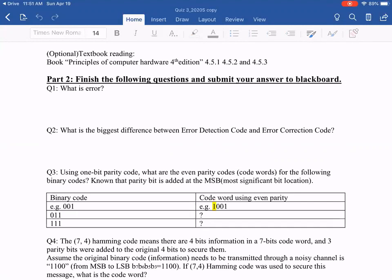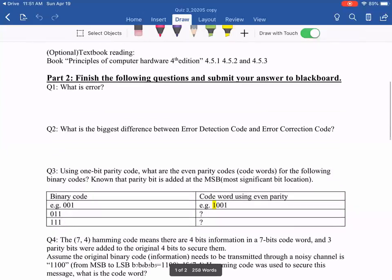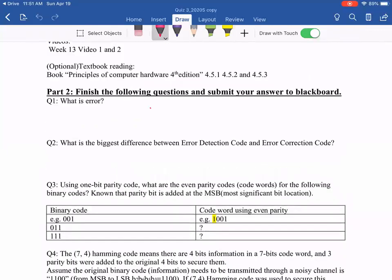So if there are always zeros and ones, then what is the error? So the error could only be a zero change to one or a one change to zero. So it's so simple. So the definition of the error is actually,